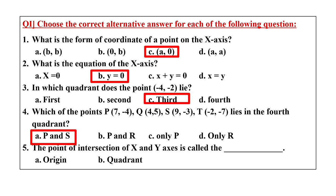The fifth question: the point of intersection of the x and y axes is called the dash. The intersection of the x and y axes is the origin, where the x coordinate is zero and the y coordinate is also zero. So the correct answer is option A: origin.